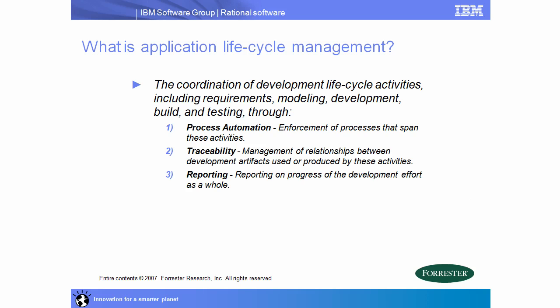So what is Application Lifecycle Management? It's often called ALM, or in our case, Collaborative ALM. We like the definition provided by Forrester, where the focus is really on the coordination of development life cycle activities, which includes managing requirements, modeling, development, build management, and testing, through the three dimensions of process automation, traceability, and reporting.